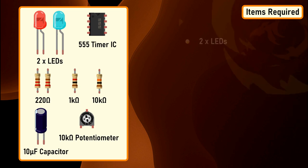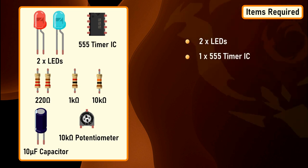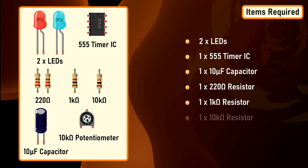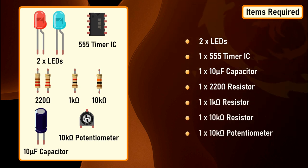For this tutorial, we need two LEDs, one 555 timer IC, one 10 microfarad capacitor, one 220 ohm resistor, one 1 kilohm resistor, one 10 kilohm resistor and a 10 kilohm potentiometer.